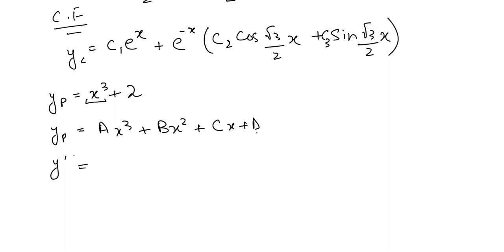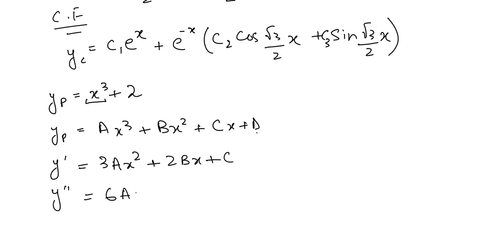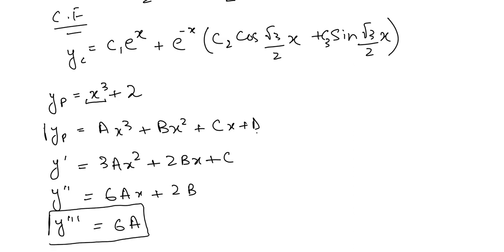We need to calculate three derivatives since our equation has d³. The first derivative is 3Ax² + 2Bx + C. The second derivative is 6Ax + 2B. The third derivative is 6A.